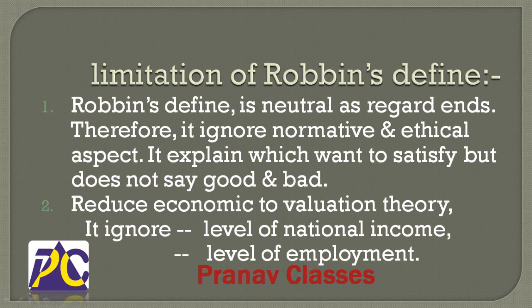Limitations of Robbins' definition: first, Robbins' definition is neutral with regard to ends — it does not say whether something is good or bad, therefore it ignores the normative and ethical aspect. It explains which want to satisfy but does not say which one is good or bad. For example, whether you want to drink liquor or smoke, it remains neutral regarding ends.